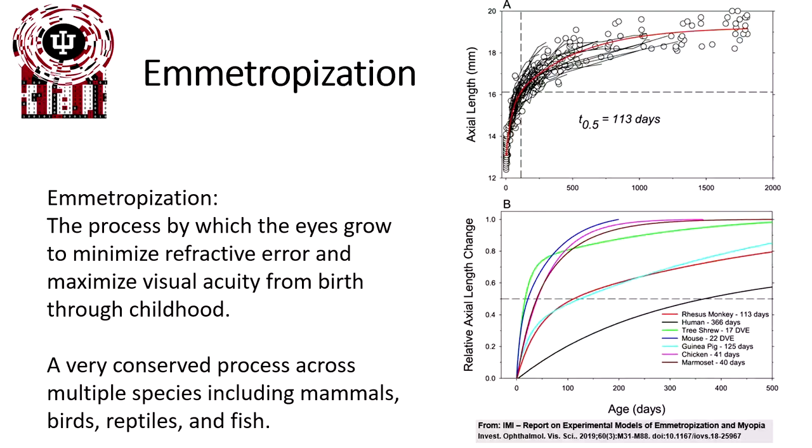There was a fast-growing period during the first three years of human life, or the early parts of animals' lives, and there's a slow period from three to nine years old where it finishes completing itself through emetropization.